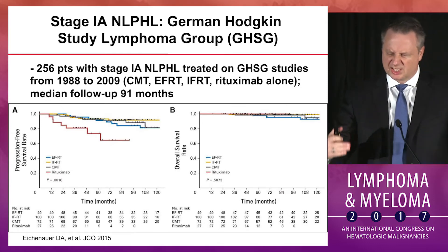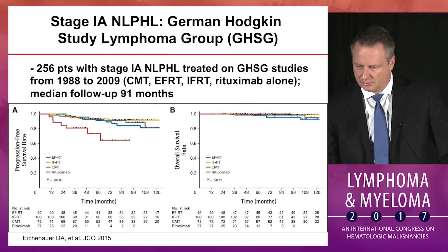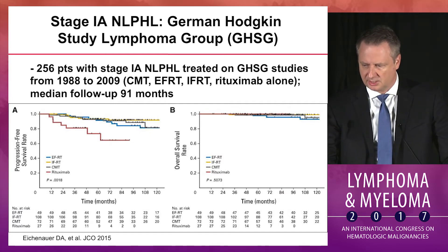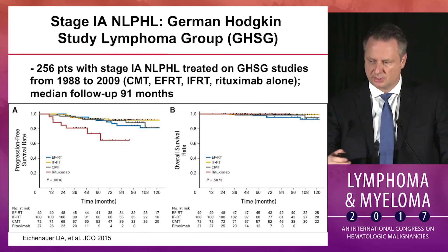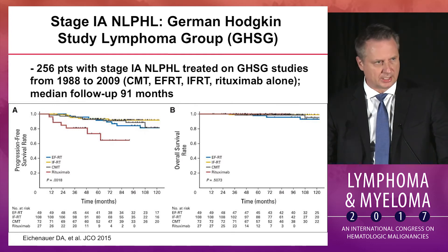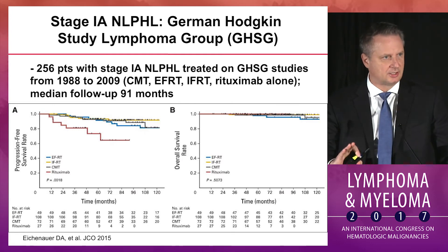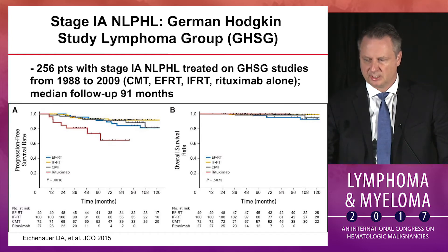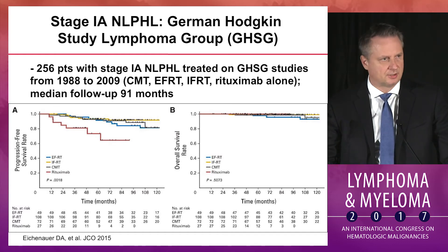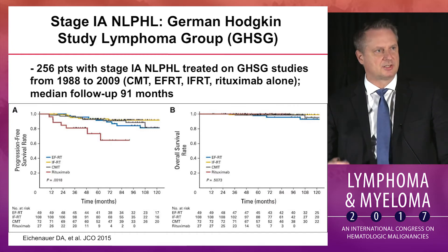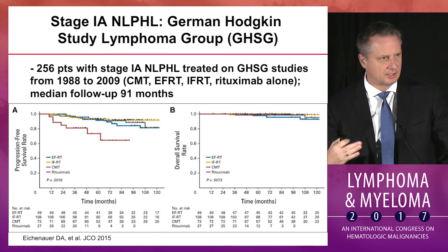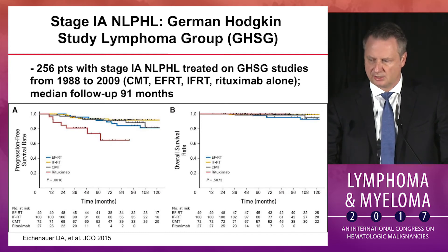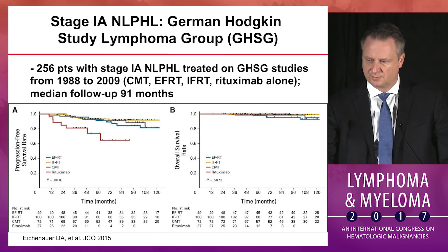Among all other options, there was not a large difference whether combined modality or radiation alone — though this was not a randomized study. I would say one of the more common treatments, especially if it's in the neck and not central, and without concerns about secondary effects, is that low-dose involved-field radiation — around 30 to 36 Gy — would be a reasonable option for stage 1 disease.